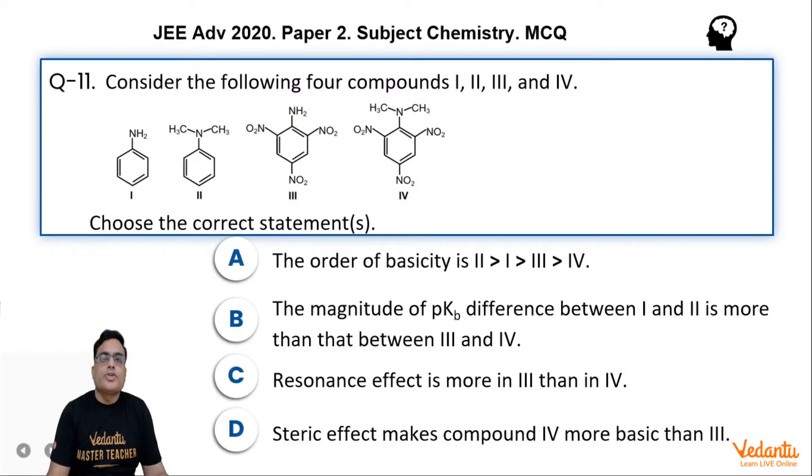This question is a multi-correct answer type question. Consider the following four compounds I, II, III, and IV. This is aniline, it is N,N-dimethyl aniline, it is 2,4,6-trinitroaniline, and it is N,N-dimethyl-2,4,6-trinitroaniline. These are the four compounds. Choose the correct statements.